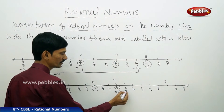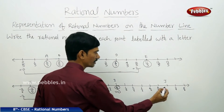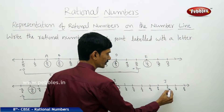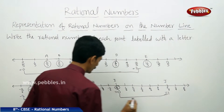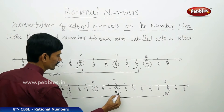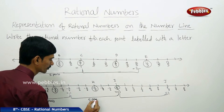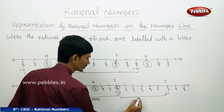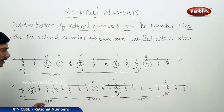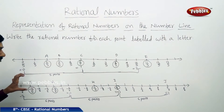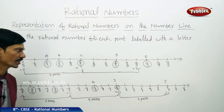Continuing from 0: 1 by 6, 2 by 6, 3 by 6, 4 by 5, 5 by 6, and 6 by 6 which equals 1. So from 0 to 1 and minus 1 to 0, each unit is divided into 6 equal parts. In this way, any rational number can be represented on the number line, and you can easily find any missing rational number.